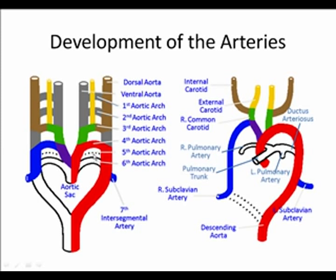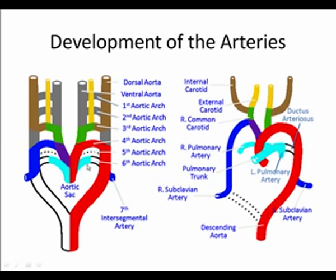The fifth aortic arch never really appears, so it degenerates. The sixth arch contributes to the proximal pulmonary arteries, right and left. The distal portion has different fates: on the right it degenerates along with the descending aorta on that side, while on the left the distal portion of the sixth aortic arch remains as the ductus arteriosus, shunting blood from the pulmonary trunk to the aorta in the fetus until birth.